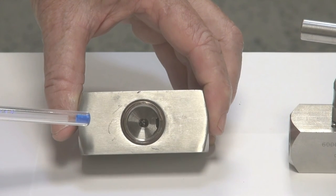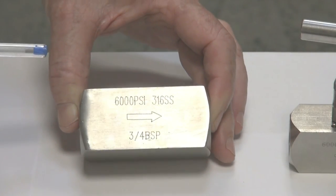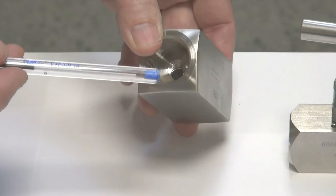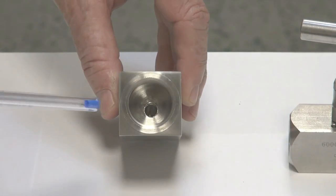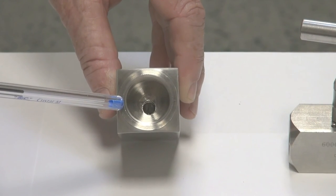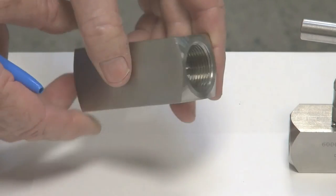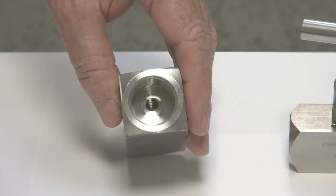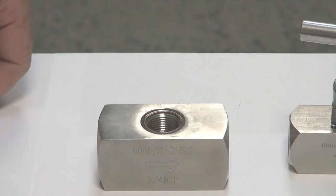We look into the end, and you can see the hole going through here. This is a three-quarter inch BSP, but as you can see, the hole's only about five millimeters through there, and likewise in the outlet in the opposite direction.